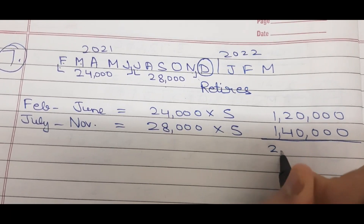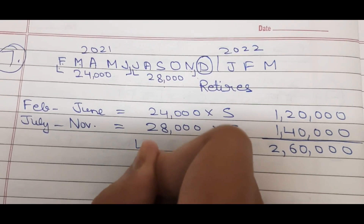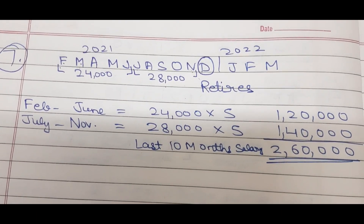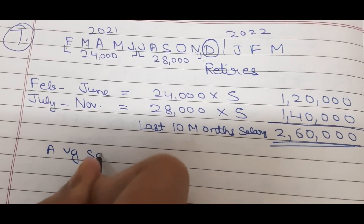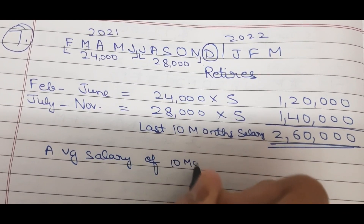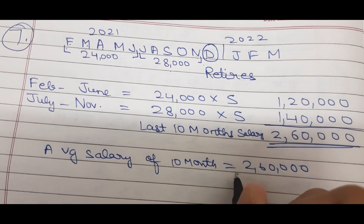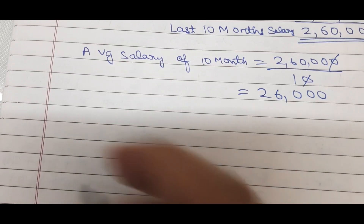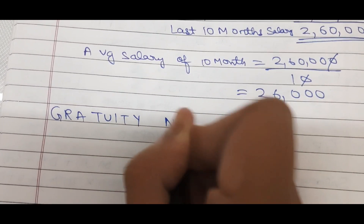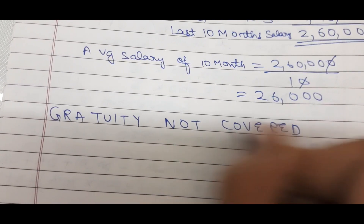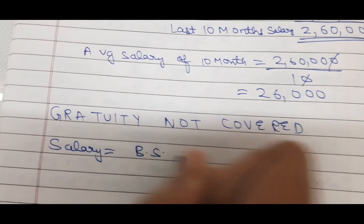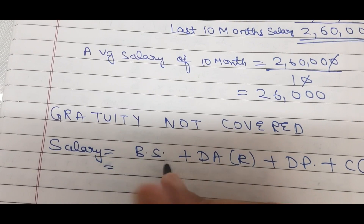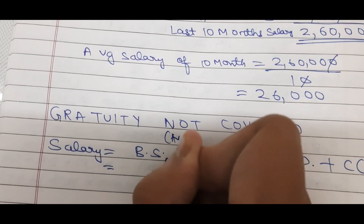Adding these: ₹1,20,000 + ₹1,40,000 = ₹2,60,000 — this is the total salary for the last 10 months just before retirement. Now we need only the average salary, so average salary of 10 months = ₹2,60,000 ÷ 10 = ₹26,000 per month.